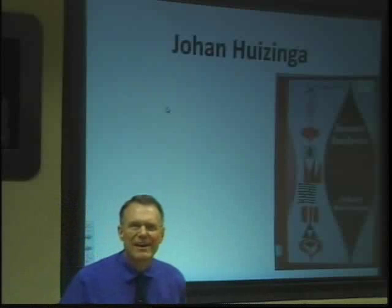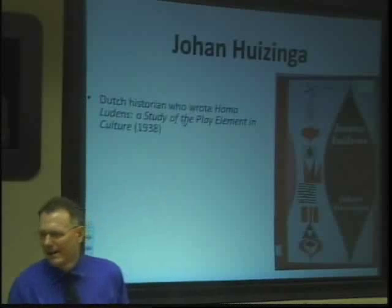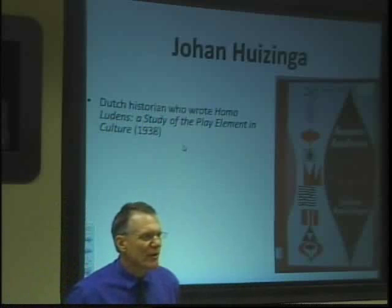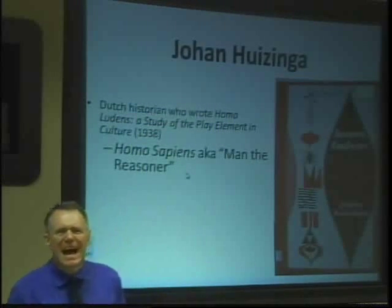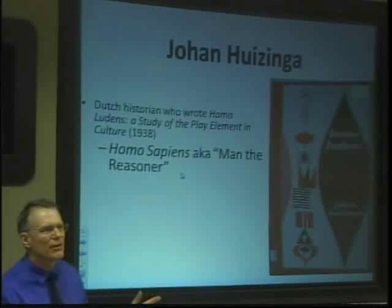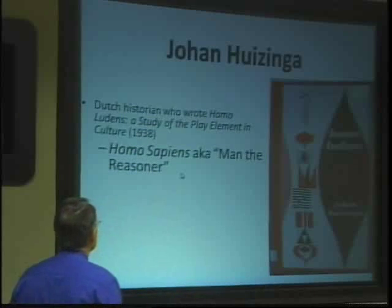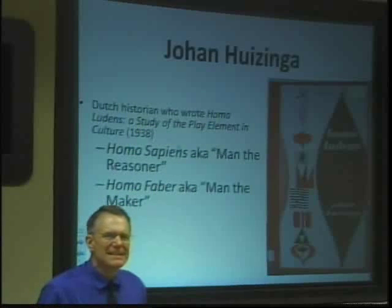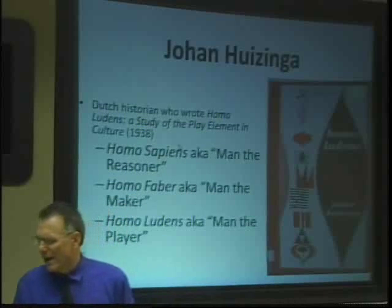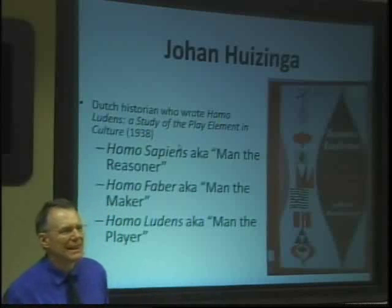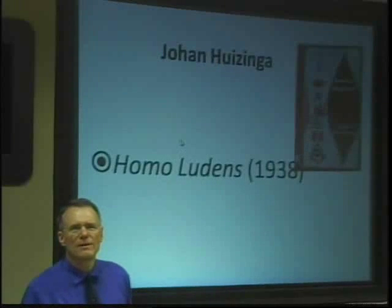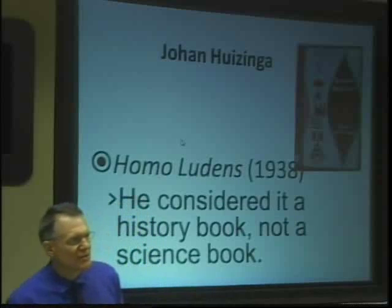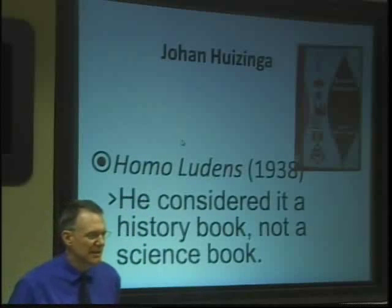We are going to start talking about Johan Huizinga, who was a Dutch historian who wrote the book Homo Ludens: A Study of the Play Elements in Culture, in 1938. At the time, the term Homo Sapiens — Man the Reasoner — was a very popular scientific concept, and they had come up with Homo Faber — Man the Maker. Huizinga thought he would jump on that bandwagon and come up with Homo Ludens — Man the Player. He considered his book a history book, not a science book.